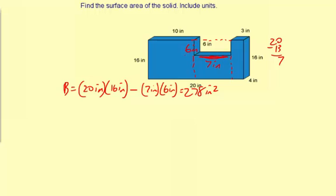And there are two of these bases. There's one in the front and another one in the back. So I can say we're going to have two of these 278 square inches so far.